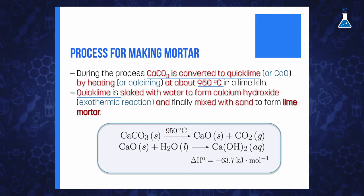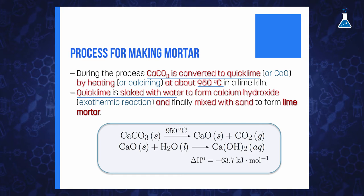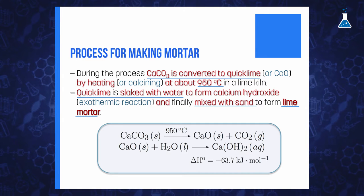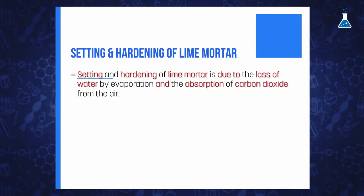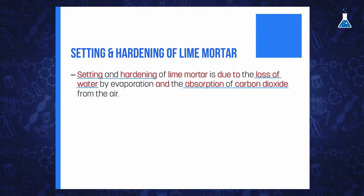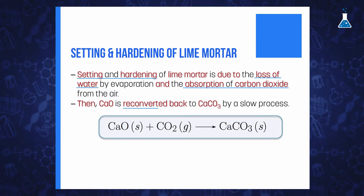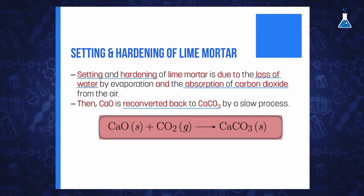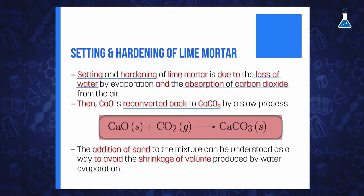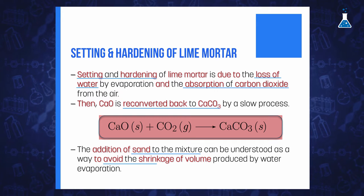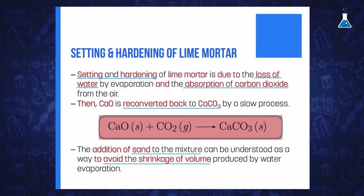The quicklime is then slaked with water, forming calcium hydroxide, and then mixed with sand to form lime mortar. The setting and subsequent hardening of lime mortar is due to the loss of water by evaporation and by the absorption of carbon dioxide from the air, which leads to the slow reconversion of calcium oxide back to calcium carbonate, as illustrated in the following equation. The presence of sand in the mixture avoids the shrinkage of volume produced when water is lost during the setting.